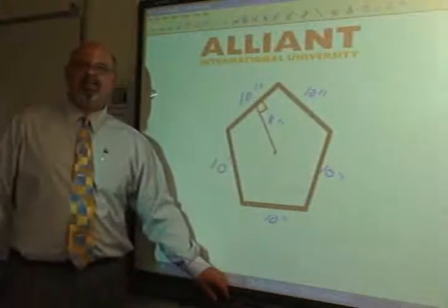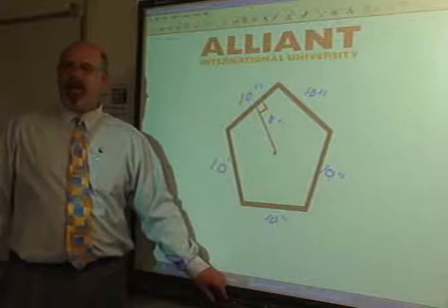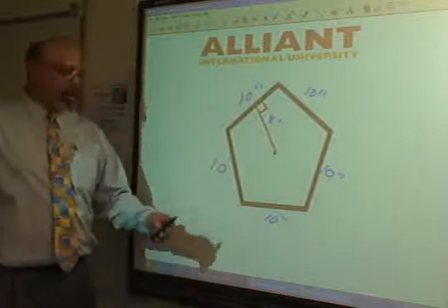We're going to find the area of a regular polygon. It's got five sides. It's called a pentagon or a pentagram. Don't be frightened.